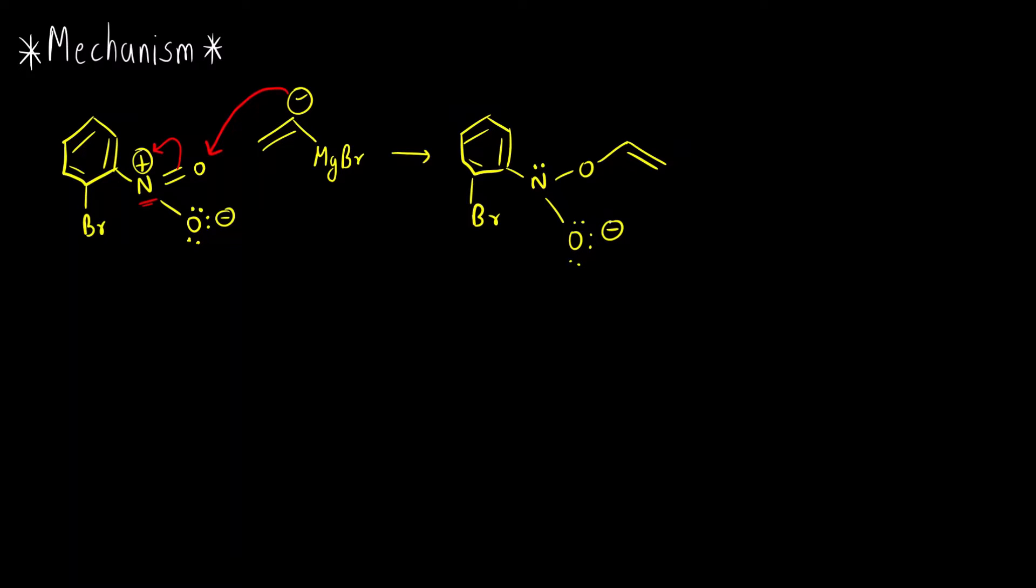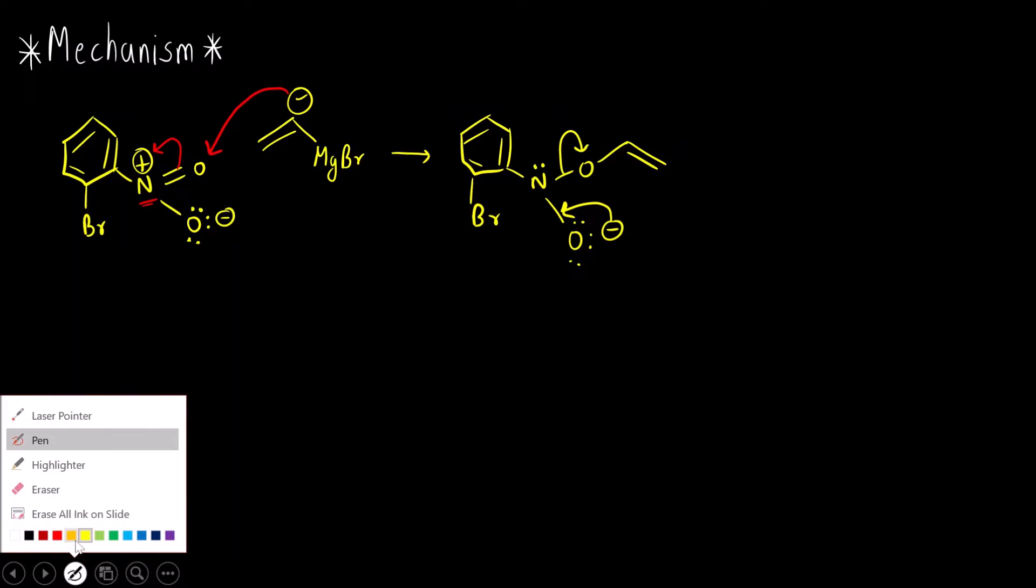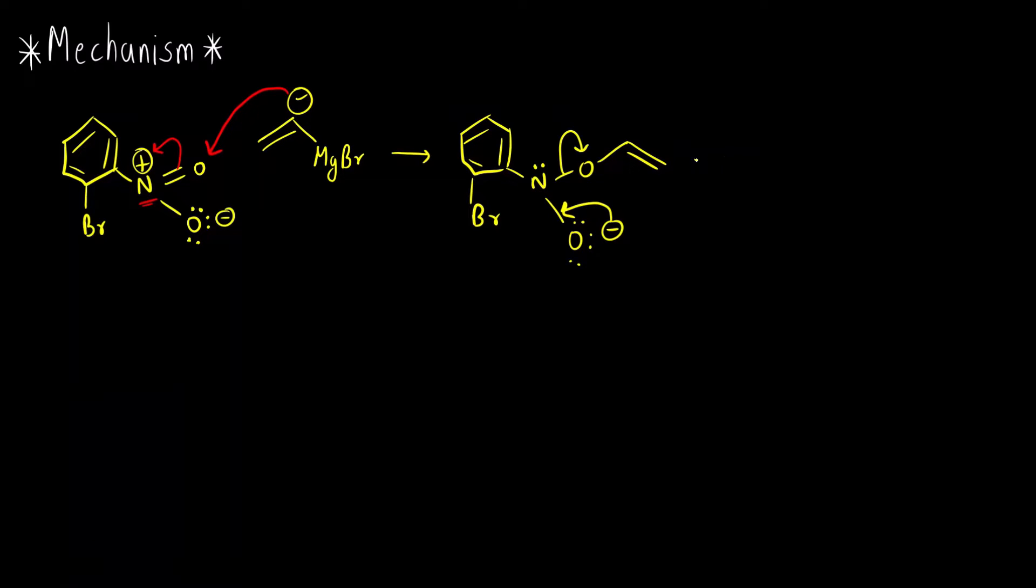Now the next step is this will come here and this will go away as a good leaving group. And what do we get is we get a nitroso intermediate. Okay, benzene ring remains as it is, bromo. Here what do we get N double bond O. This is R-N=O, this is called as nitroso intermediate.